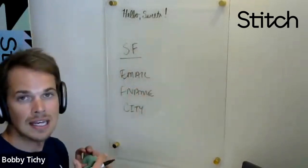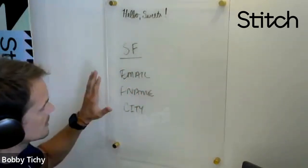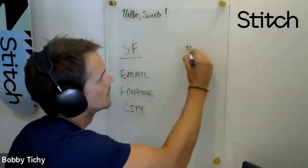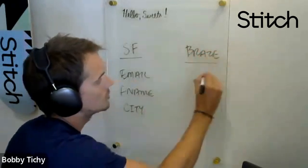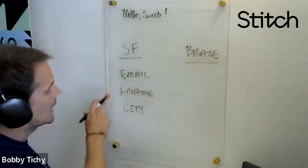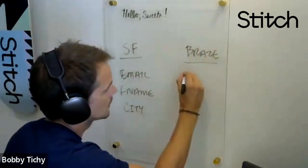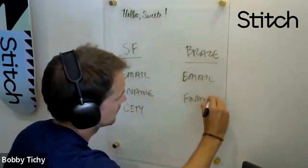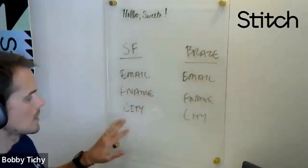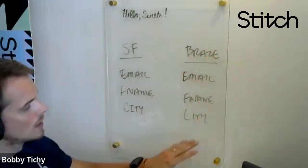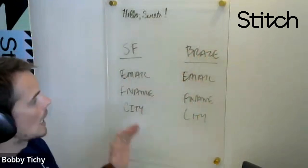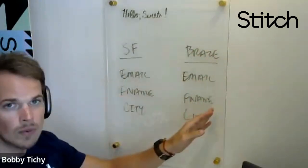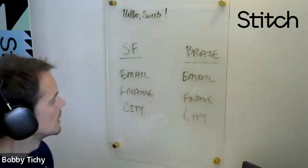To make sure that data gets translated over to Braze, we need to take Salesforce's data model and map it to Braze's data model. Braze's attribute and event data model already has these key fields: email, first name, and city. We can also add any custom fields on the Salesforce side and map them on the Braze side. So how do we get these fields into Braze so we can use them for messaging, orchestration, and so on?